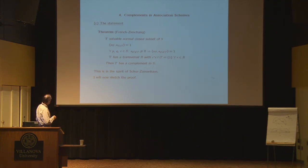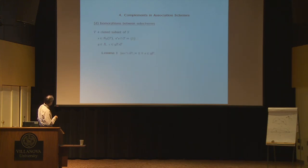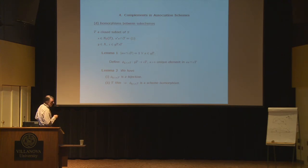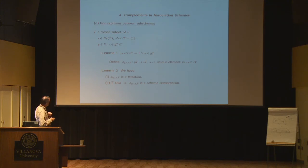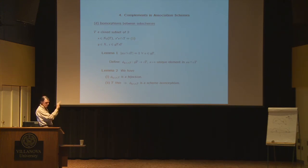The key steps of the proof: the two conditions yield bijective maps (actually scheme isomorphisms, when T is thin) between geometric cosets — the equivalence classes of the scheme with respect to T. One then composes three such isomorphisms to form circuits between geometric cosets, which produce automorphisms of the initial association scheme. Analyzing which automorphisms arise is the heart of the proof.